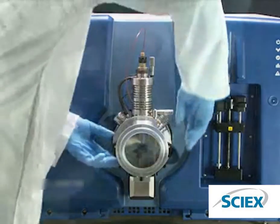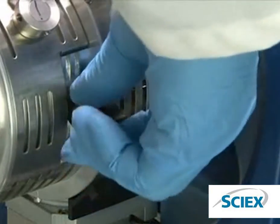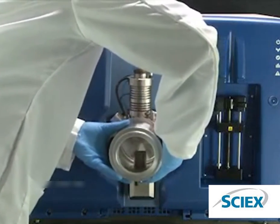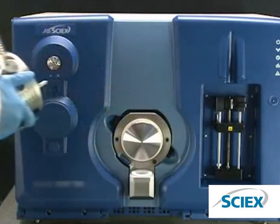To unlock the ion source, turn the source handles upwards to release it. Next, firmly grasp the outside of the source with two hands and pull the source away from the mass spectrometer.